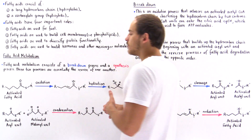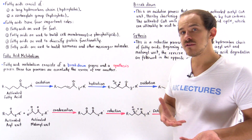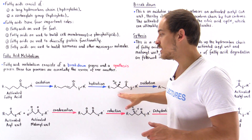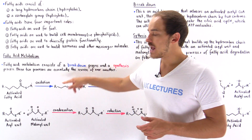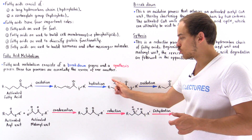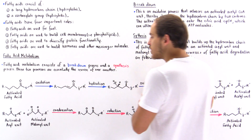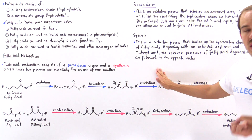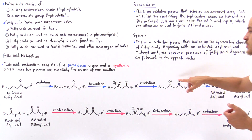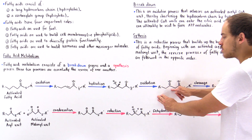Once we form the double bond, the next step is a hydration step, which ultimately attaches a hydroxyl group onto this carbon. Going from here to here, we break that pi bond and attach the hydroxyl group, giving us an alcohol group. In the next step — once again an oxidation step — we extract electrons and transform this hydroxyl group into a carbonyl group, forming a ketone.